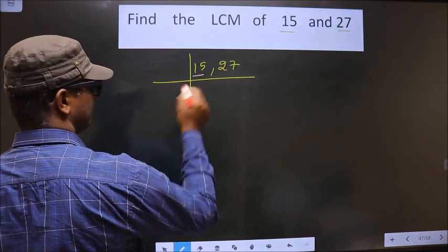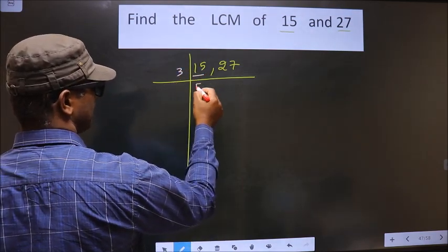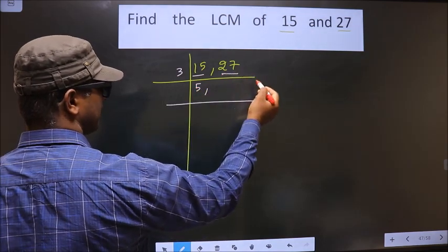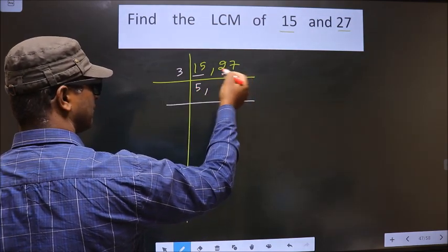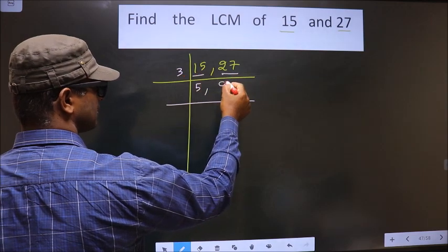Here we have 15. 15 is nothing but 3 times 5. Here we have 27. So when do you get 27 in the 3 table? 3 times 9 is 27.